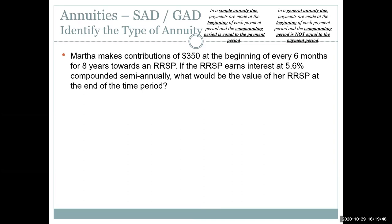Martha makes contributions of $350 at the beginning of every six months for eight years towards an RRSP — a registered retirement savings plan. The RRSP earns interest at 5.6% compounded semi-annually. We're looking for the value at the end of the time period, so that's future value. Payments are made at the beginning of every six months — beginning means due — and the payment period semi-annual matches the compounding period semi-annual, so this is a simple annuity due.